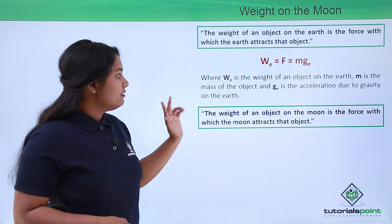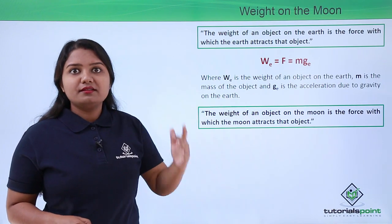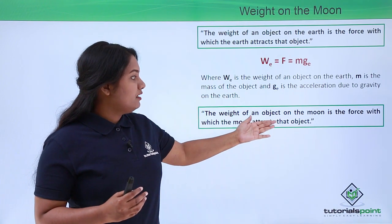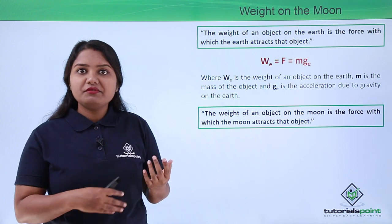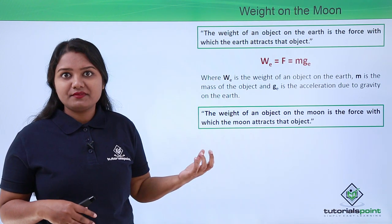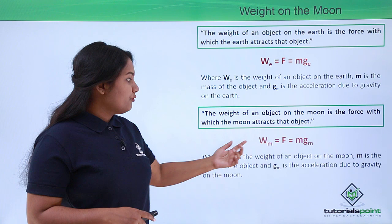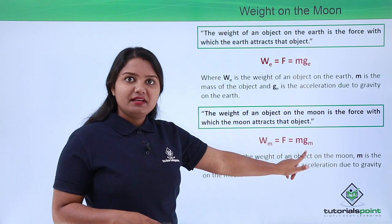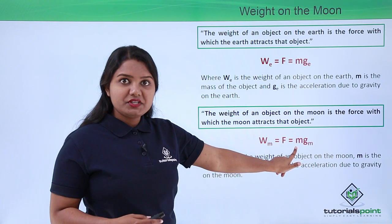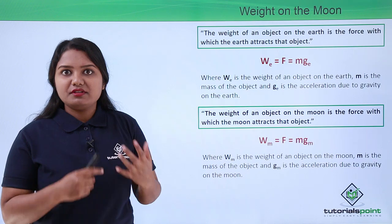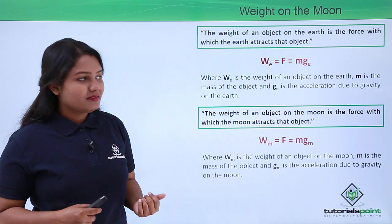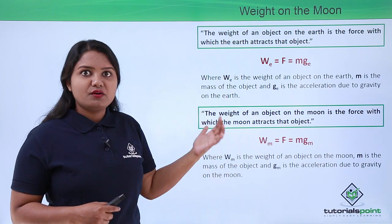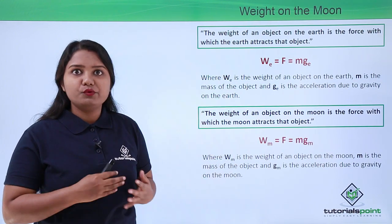The weight of a body or object on the moon is also the same concept — it is the force with which the moon attracts that body towards itself. So this force or weight is given by W_m equals F equals M into g_m, where m is the mass of the object and g_m is the acceleration due to gravity of the moon. These expressions give us the weight of an object on the surface of the earth and on the surface of the moon respectively.